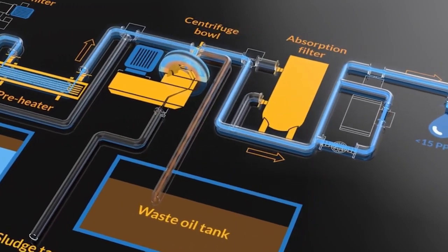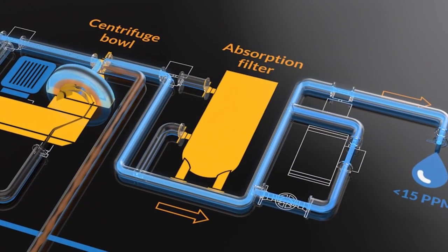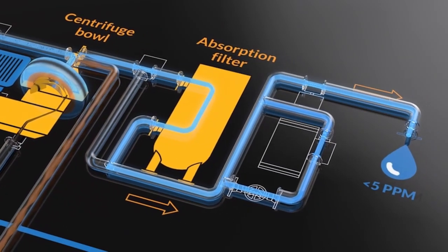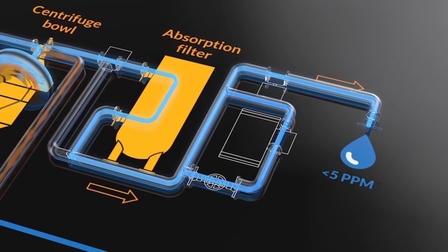In some systems, an absorption type filter may be fitted after the separator. When used, this enables the oil content to be further lowered to below 5 ppm.